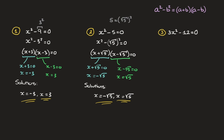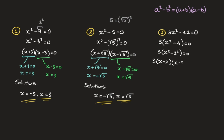Moving on to the third and final example: we need to solve 3x squared minus 12 equals 0. Unlike the first two examples, here we have a 3 multiplying x squared. When that happens, I like to place the number multiplying x squared as a factor to the entire left hand side. So I rewrite this as 3 times in parentheses x squared minus 4 equals 0. Since 4 equals 2 squared, we can write this as 3 times x squared minus 2 squared equals 0, and then factor to get 3 times x plus 2 times x minus 2 equals 0.